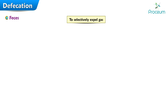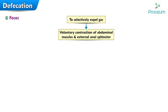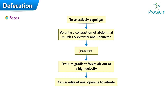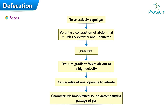To selectively expel gas when feces are also present in the rectum, the person voluntarily contracts the abdominal muscles and external anal sphincter at the same time. When abdominal contraction raises the pressure against the contracted anal sphincter sufficiently, the pressure gradient forces air out at a high velocity through a slit-like anal opening that is too narrow for solid feces to escape. This passage of air at high velocity causes the edges of the anal opening to vibrate, giving rise to the characteristic low-pitched sound accompanying the passage of gas.